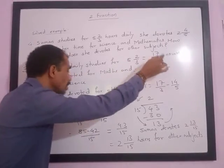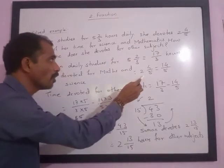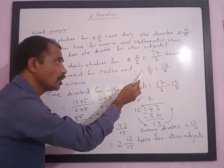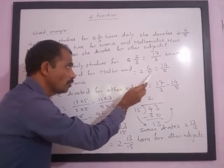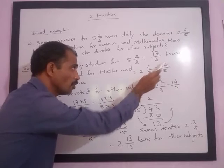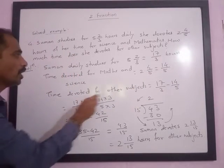Time devoted for math and science is 2 4/5. In order to write in improper fraction, we have to multiply 2 multiplied by 5 plus 4. 5 times 2 is 10, 10 plus 4 is 14. 14 upon denominator remains same: 5.